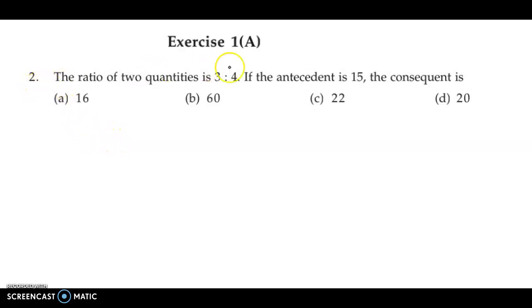We now discuss the second question from exercise 1A. The ratio of two quantities is 3 to 4. If the antecedent is 15, then the consequent is?